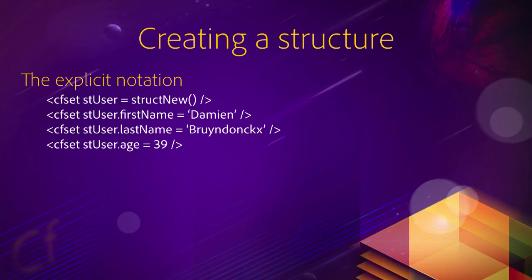The second cfset statement will add a first key-value pair inside of that structure. So we say stuser.firstname equals Damien. In this case, firstname is the key and Damien is the value. We have then a third cfset statement that creates a second key-value pair - lastname is the key, stuser.lastname, and Bruindungs is the value, that's my last name. Then we have a fourth cfset statement that creates a third key-value pair. The key is h and 39 is the value. So we end up with a single variable, stuser, that contains all three pieces of information.